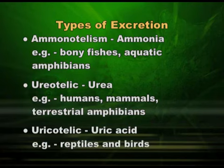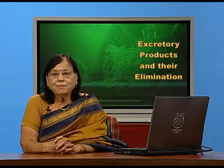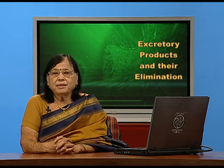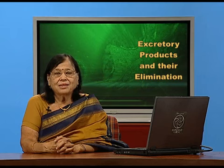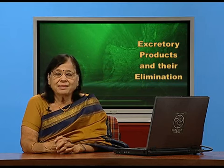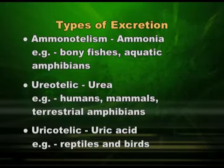Birds' excreta, which you must have seen, comes as a black particle with a yellow particle on top. The black particle is faeces and the yellow particle is urine — a solid urine, a crystal — the uric acid crystal. So no loss of water takes place. To summarize, in terms of excretory matter, animals can be ammonotelic, ureotelic, or uricotelic.